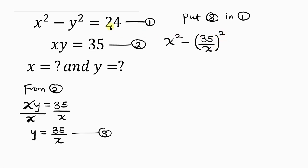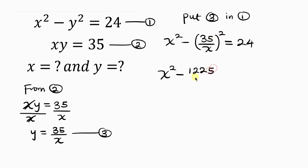So we have x squared minus (35 over x) squared equal to 24. According to indices rules, the power affects both numerator and denominator, so this becomes x squared minus 35 squared over x squared, which is 1225 over x squared, equal to 24.